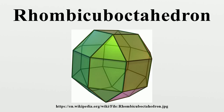Games and toys: The Freescape games Driller and Darkside both had a game map in the form of a rhombic aboctahedron. The Hurry Scurry Galaxy in the video game Super Mario Galaxy has a planet in the similar shape of a rhombic aboctahedron. Sonic the Hedgehog 3's Ice Cap Zone features pillars topped with rhombic aboctahedra.